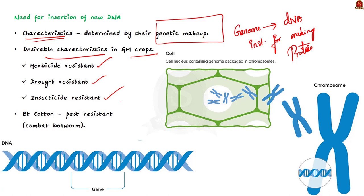For instance, let us take BT cotton. BT cotton is a genetically modified, pest-resistant cotton variety which has the ability to combat bollworm. So far, we saw the basics of GM crops. Now let us see the procedure for approval in India.